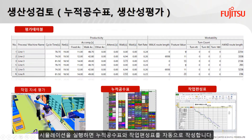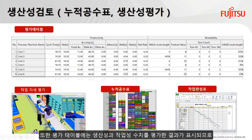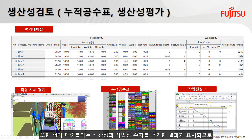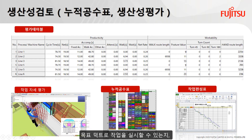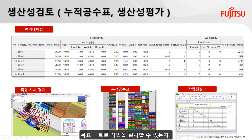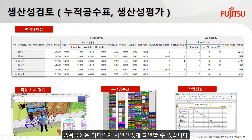When the simulation is executed, the process balance chart and work combination table are automatically created. In addition, the evaluation table shows the results of numerical evaluation of productivity and workability. Therefore, you can check with good visibility whether the work can be carried out at the target takt time and where the bottleneck process is.